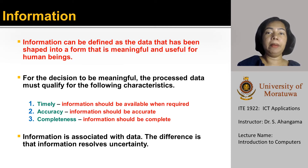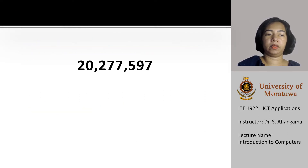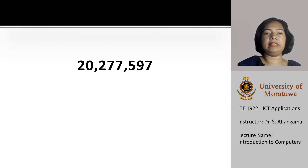Information is associated with data. The difference is that information resolves uncertainty. Let us move on to the same example: 20,277,597. We know it does not have any meaning. We know it is just a value.